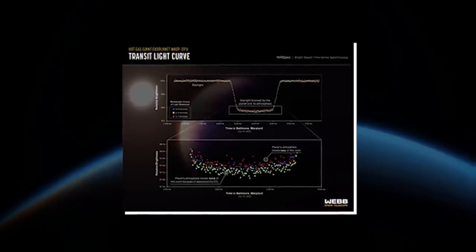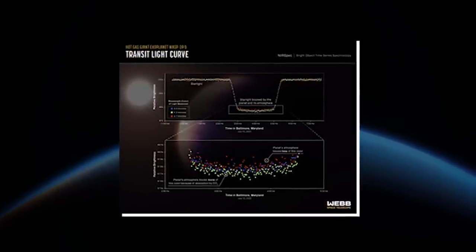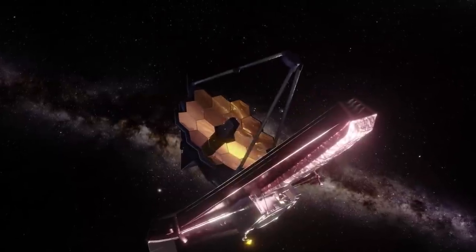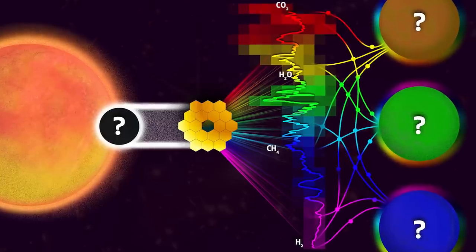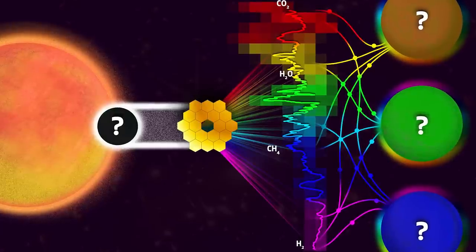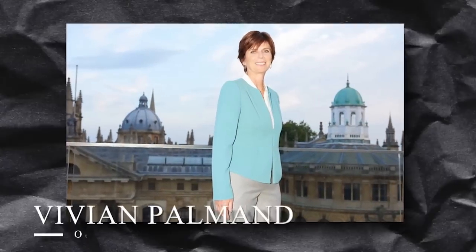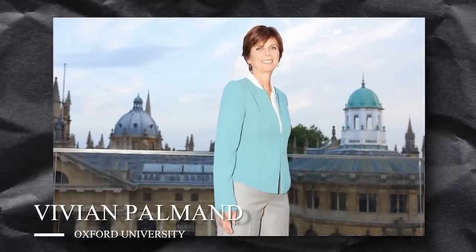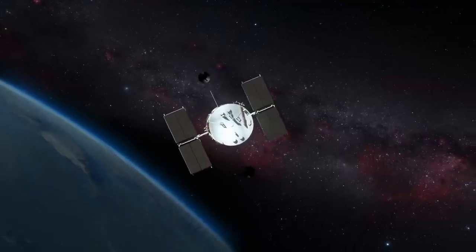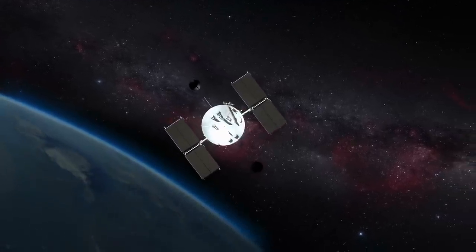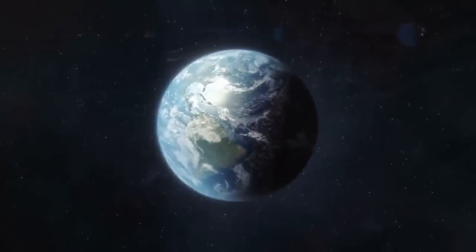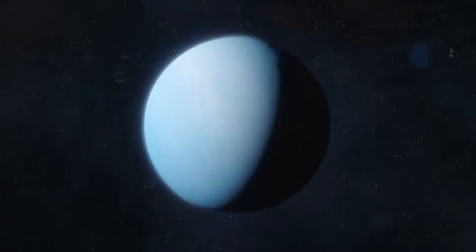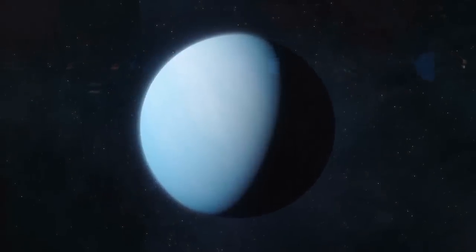Web-based planet research contains observations of two more transiting planets. The inquiry, part of the early release of the web data science effort, aims to quickly provide exoplanet researchers with web data. According to Oxford University co-investigator Vivian Palmid, the goal is to analyze early-release science observations quickly and develop open-source tools for the science community to use. This allows contributions from around the world and ensures the best possible science from the coming decades of observations.